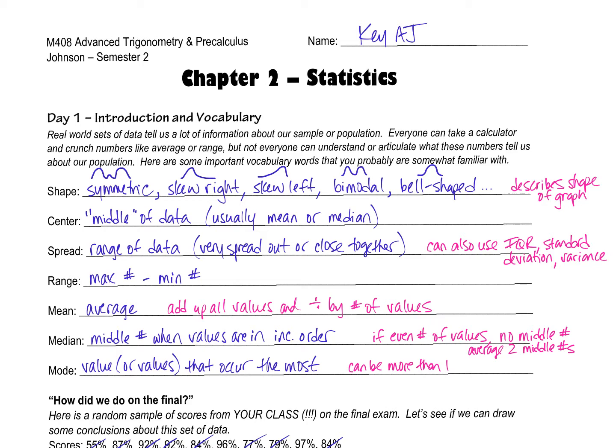Those are pretty commonly confused. Bimodal means it has two modes or two humps. Bell shaped, you know what a bell looks like. We talk about the center and usually we either discuss the mean or the median when we refer to the center. Mean and median are down here. You should probably know already what those are.